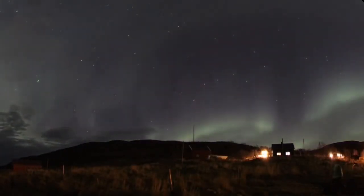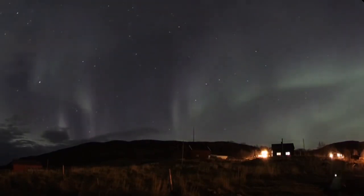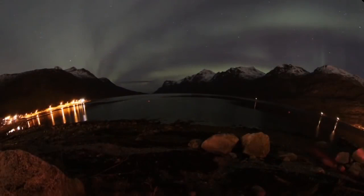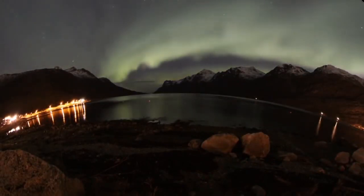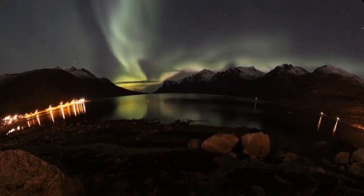Auroras can appear as long, narrow arcs extending overhead from horizon to horizon. From the side, they look like ribbons that kink, fold, and swirl.